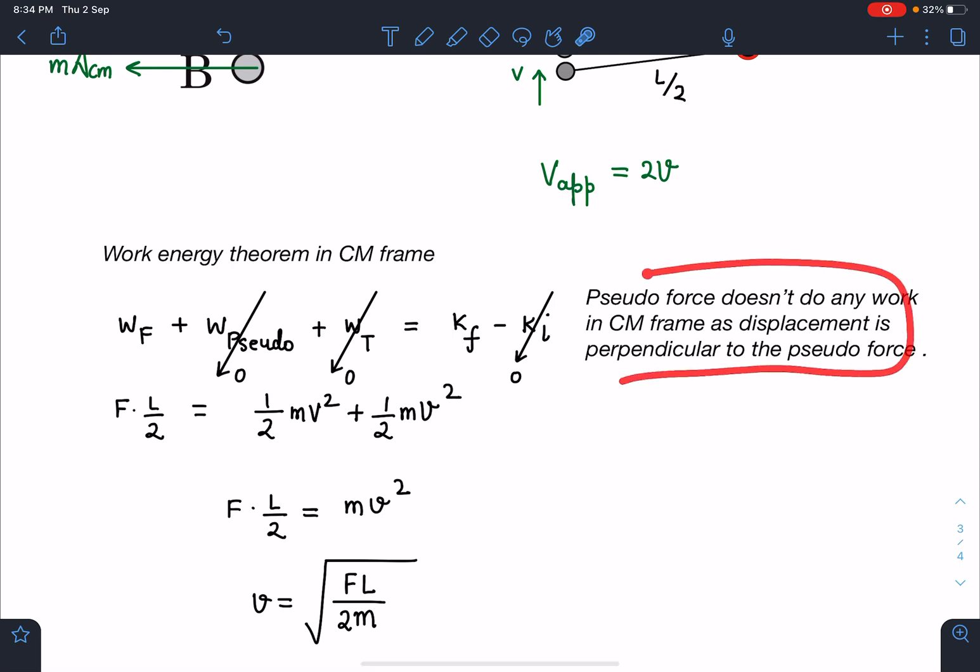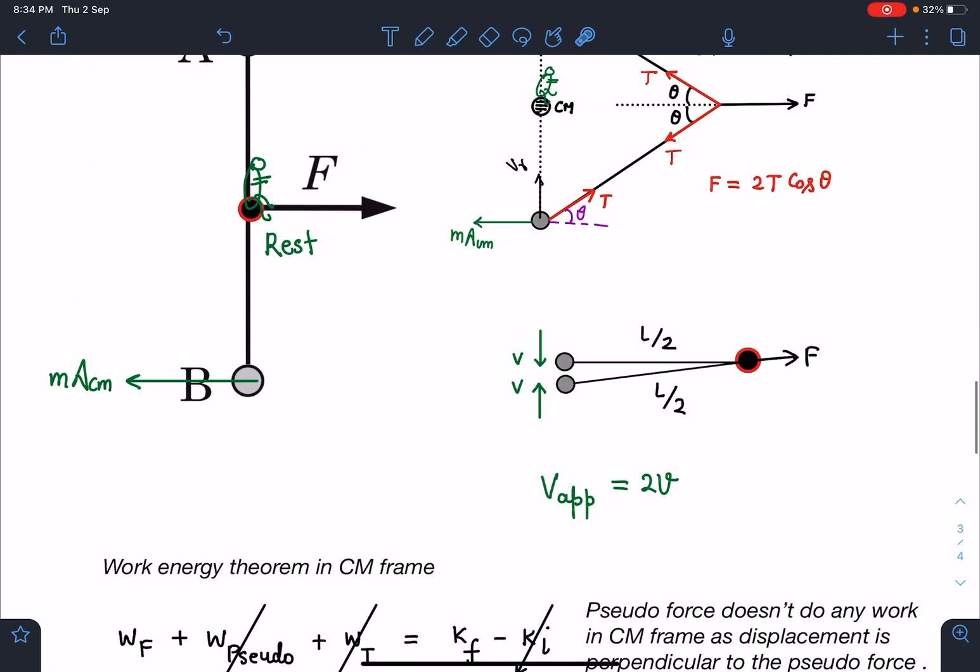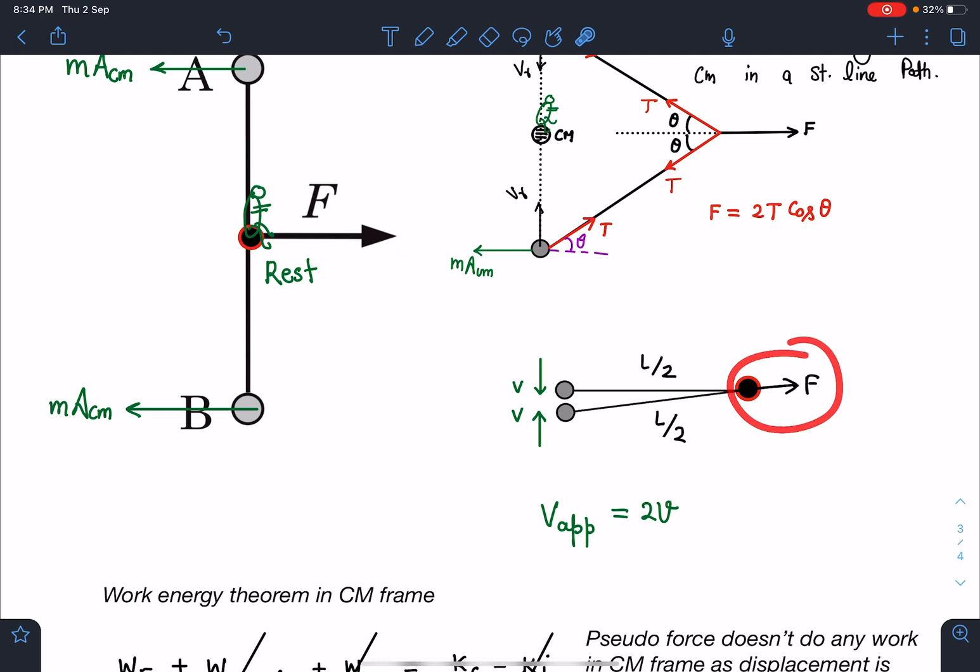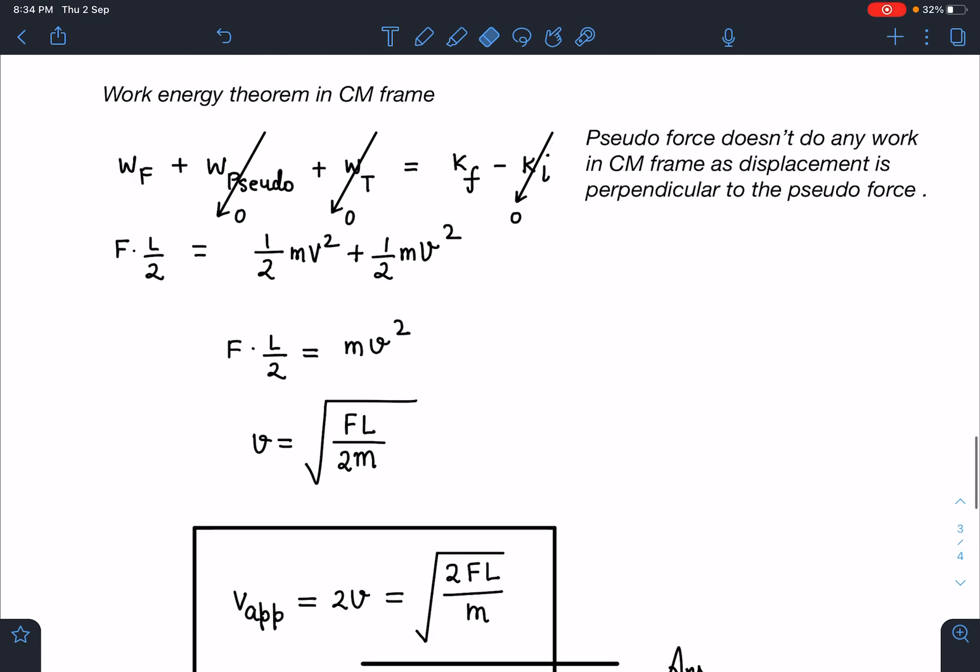So you can see here, in this case, pseudo force doesn't do any work in CM frame as displacement is perpendicular to the pseudo force. We have already discussed about this. So this term is zero, this term is zero, this term is zero. And W_F I can write simply in CM frame as force F times distance L by 2.